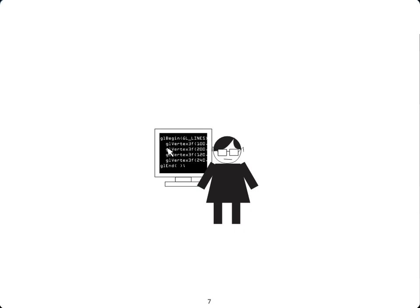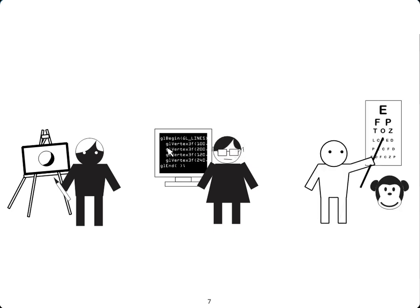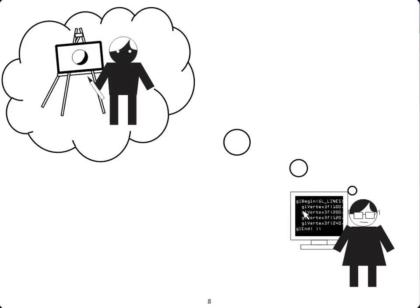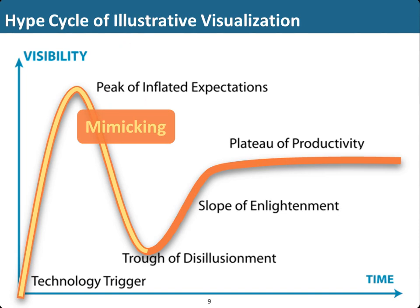We can represent it in a pictogram as well. We have a computer graphics researcher developing some OpenGL code, observing what an illustrator is doing and also what a vision scientist is doing. At the first stage of illustrative visualization research, people started to look at what visual art has provided, which visual metaphors have been developed, and tried to mimic them. So the first stage was more or less mimicking what had been observed in traditional media.